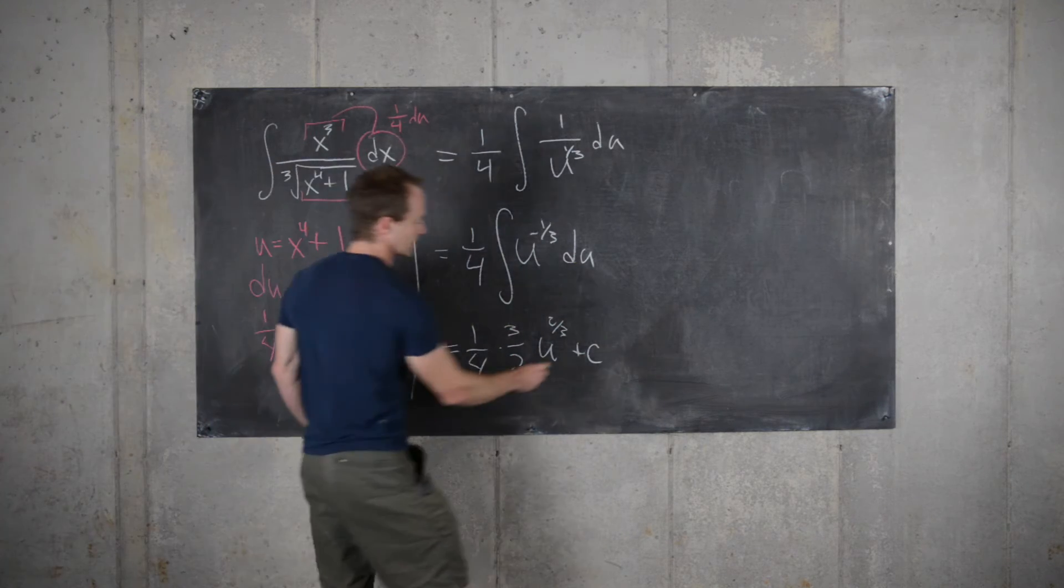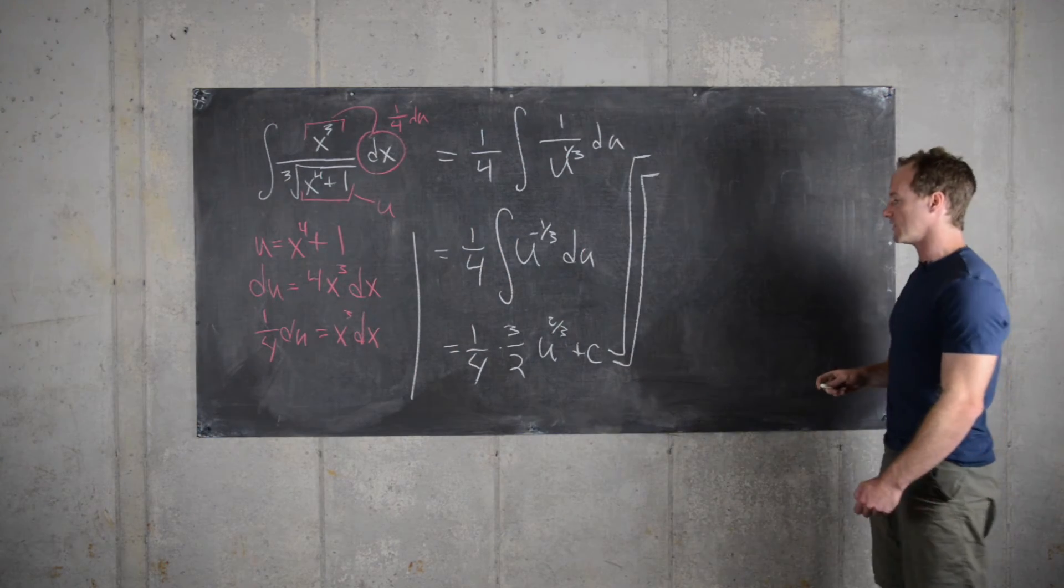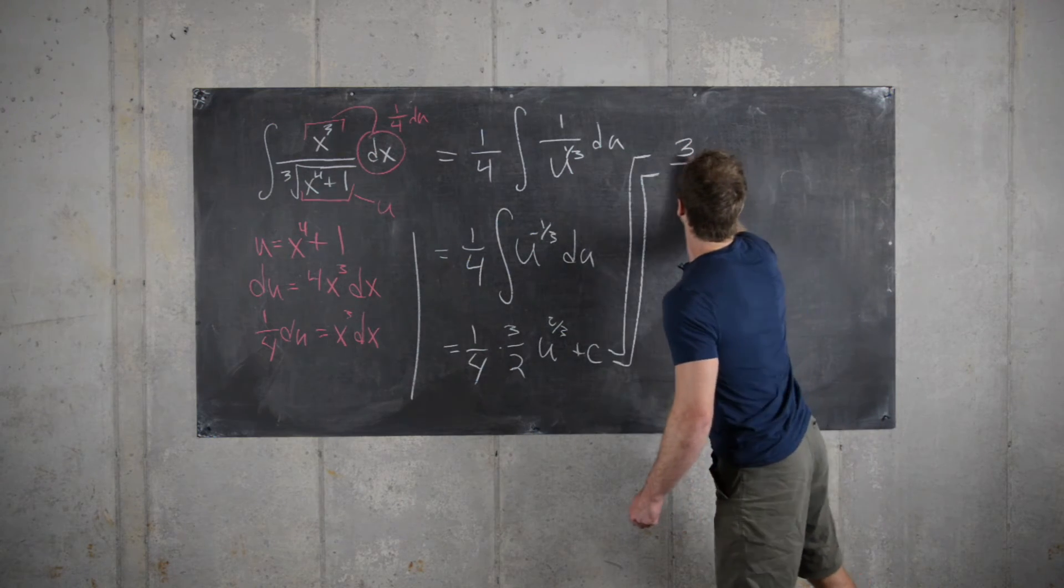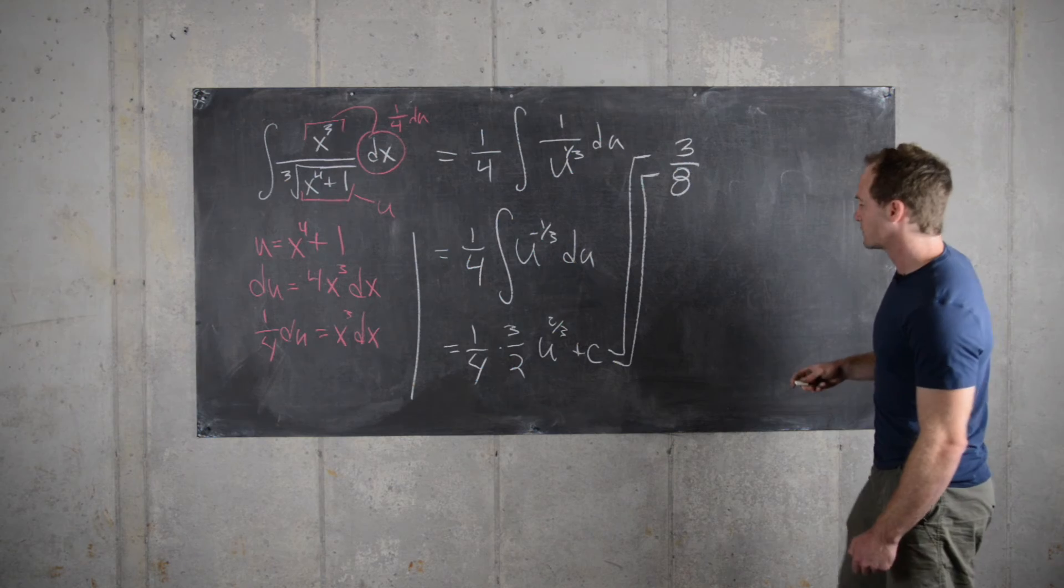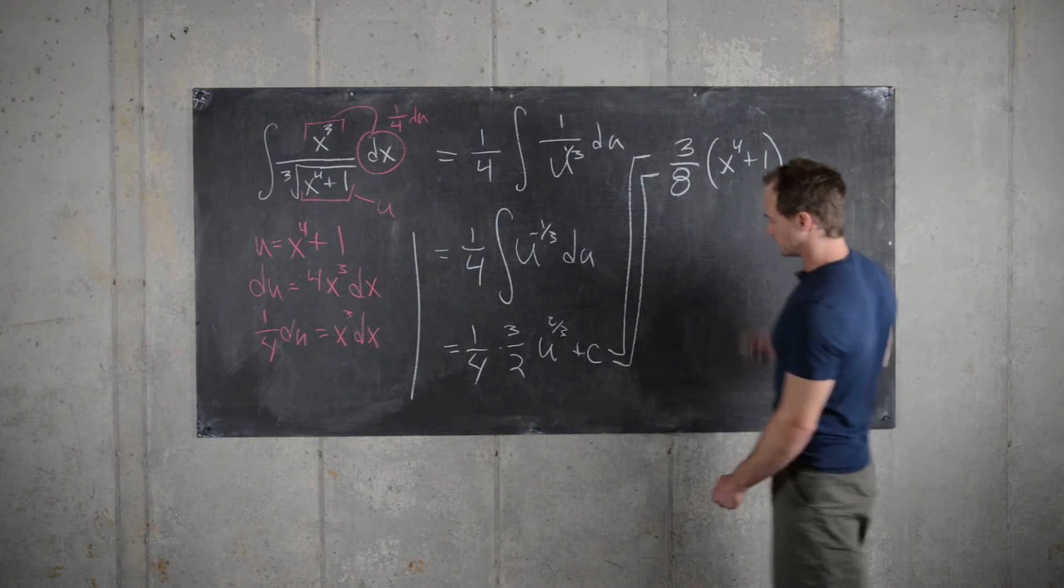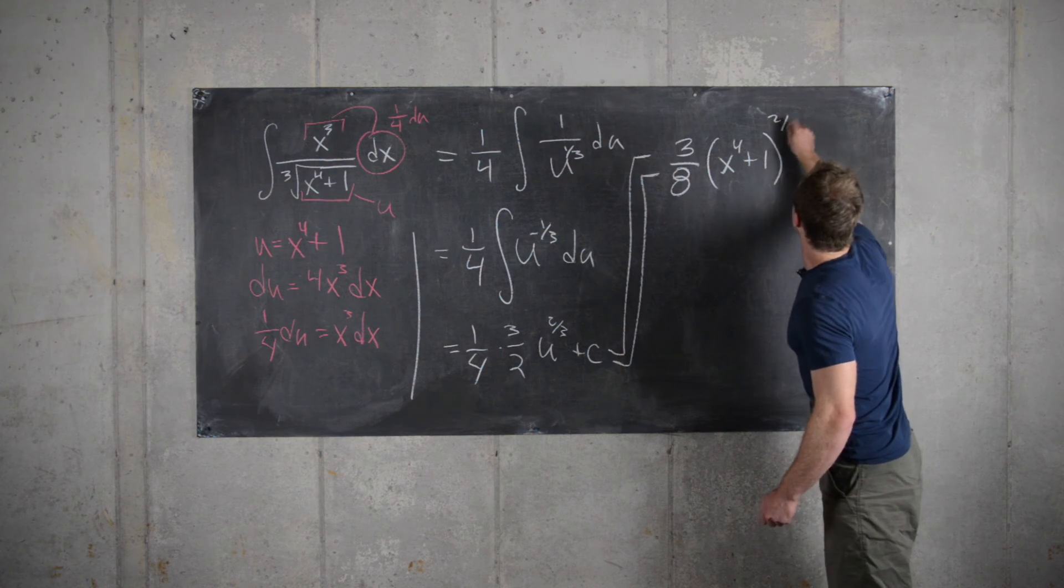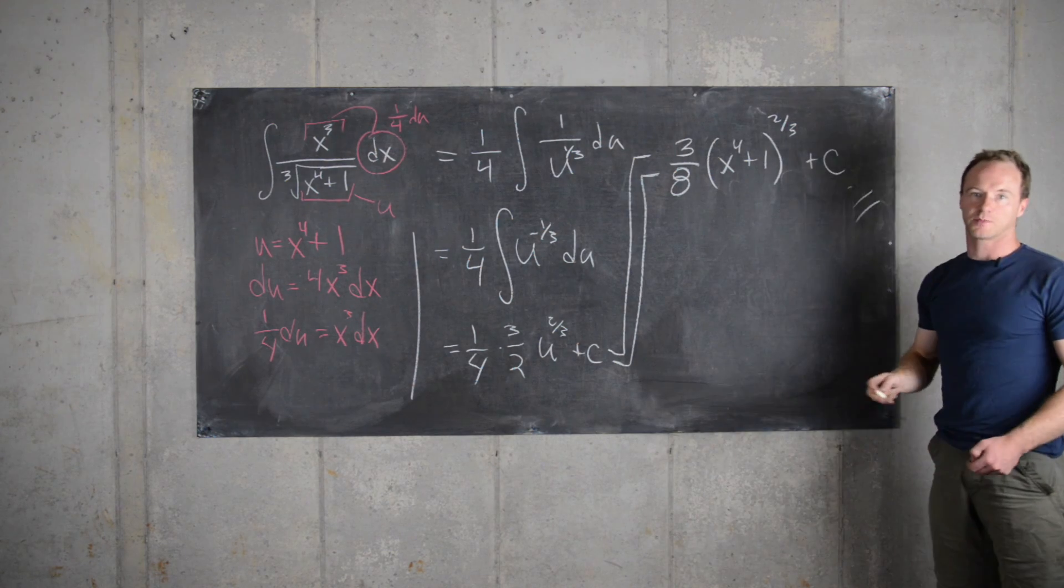Now finally, we can substitute back in for our value of u. We get 3 over 8, and then remember u was x to the 4th plus 1, so we have x to the 4th plus 1 to the 2 3rds plus our constant of integration, and that's the whole problem.